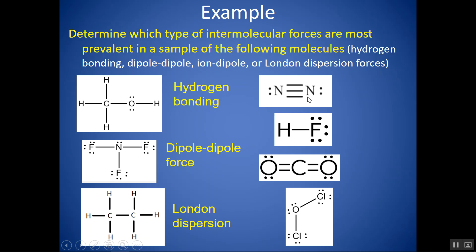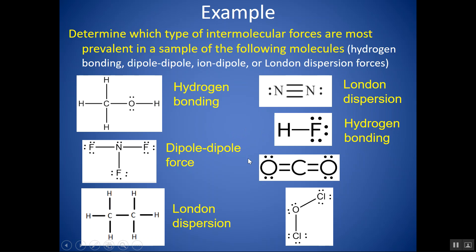Remember, nonpolar has to be London dispersion. This structure is polar and does have H bonded to an N, O, or F — so it's hydrogen bonding. Make sure the H that's hydrogen bonding is actually connected to an N, O, or F. If another HF molecule comes along, the hydrogen bond forms between the H in one molecule and the F in the other — the H–F bond within the molecule is a covalent bond, not the hydrogen bond. A linear structure with the same atom on either side is nonpolar — London dispersion. A bent structure with four domains and two lone pairs is asymmetrical and polar, but without H bonded to N/O/F, it's dipole-dipole.